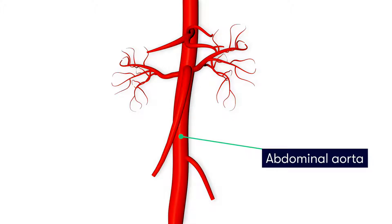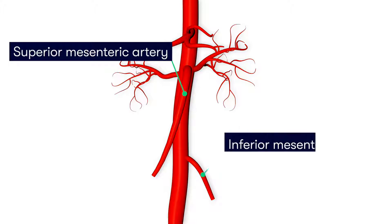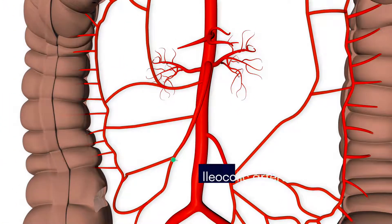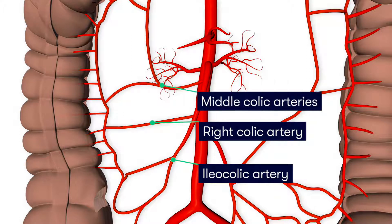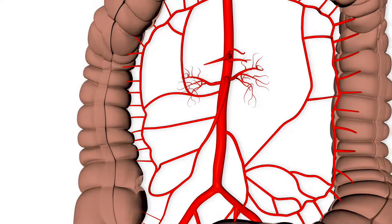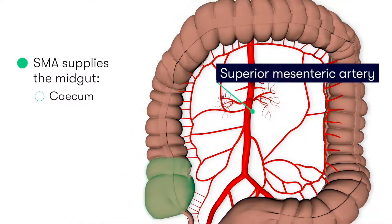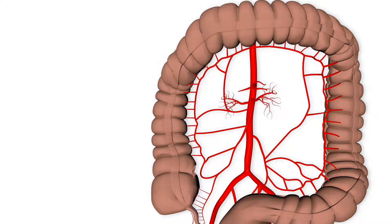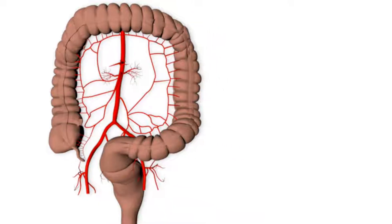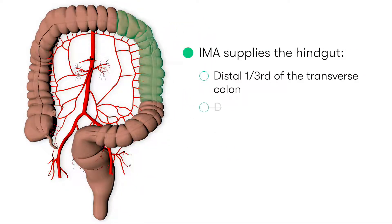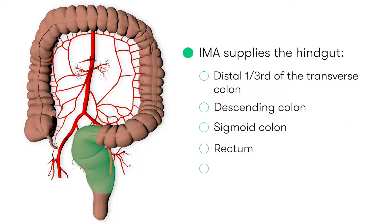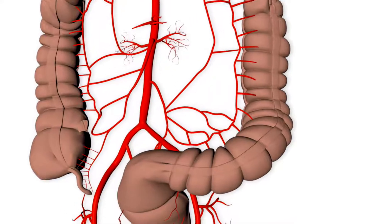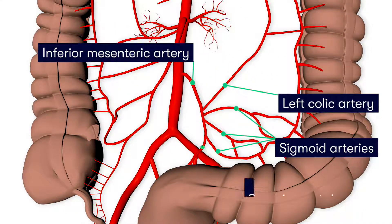The superior mesenteric artery and the inferior mesenteric artery. The superior mesenteric artery, via its branches — the ileocolic, right colic, and middle colic arteries — supplies the midgut parts of the large bowel, which consists of the cecum, the ascending colon, and the proximal two-thirds of the transverse colon. The hindgut part — the distal one-third of the transverse colon, the descending colon, sigmoid colon, rectum, and anal canal above the pectinate line — are supplied by the inferior mesenteric artery via its branches: the left colic artery, the sigmoid arteries, and the superior rectal artery.